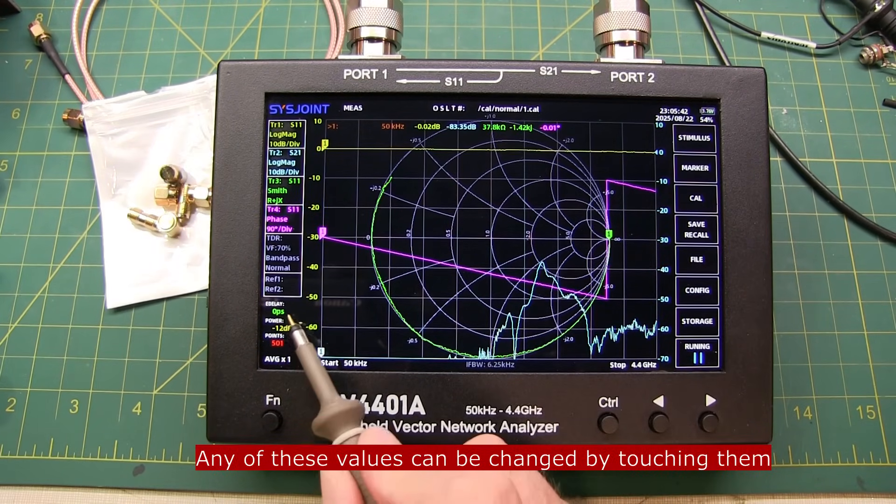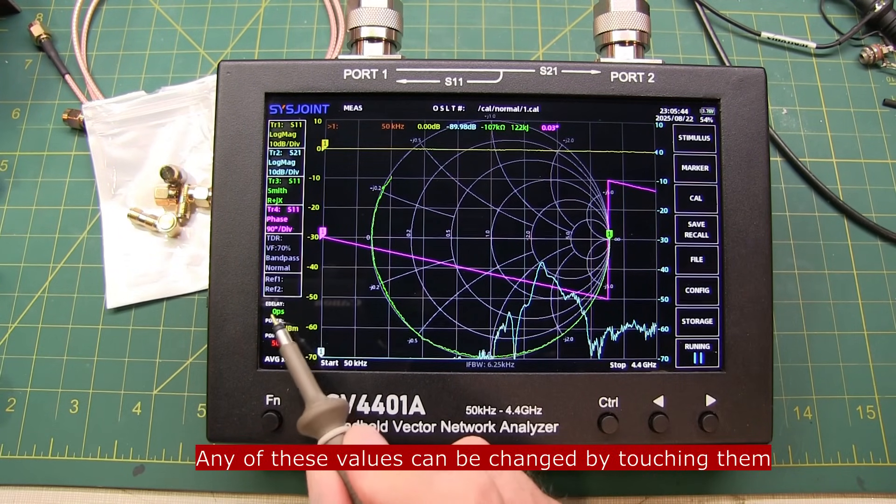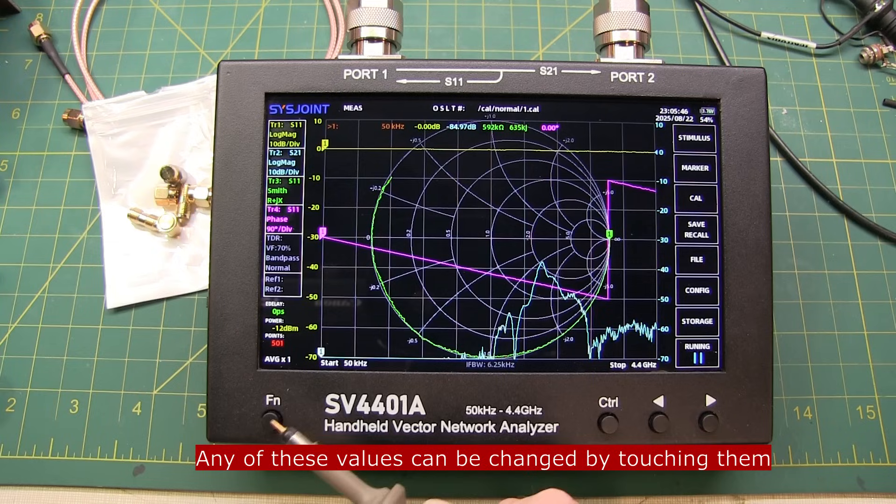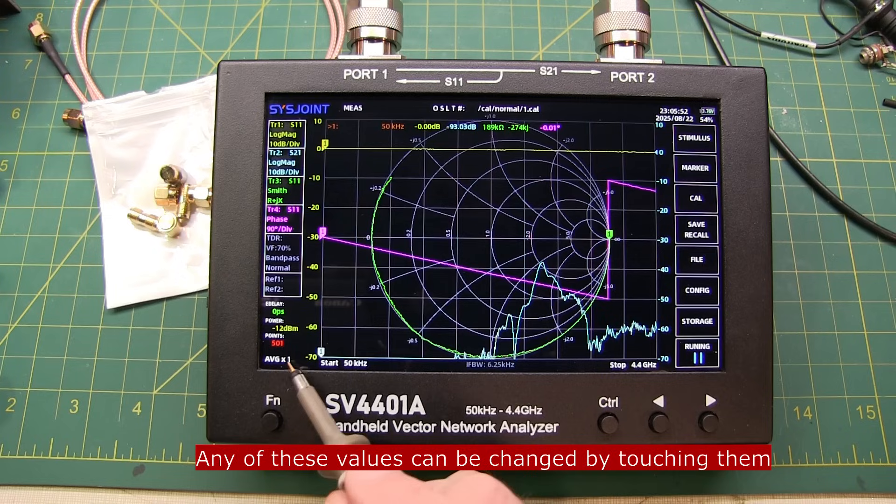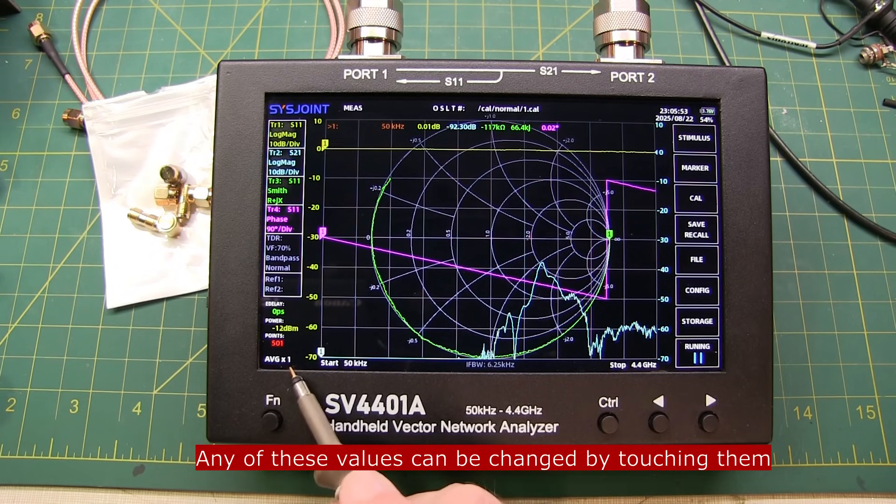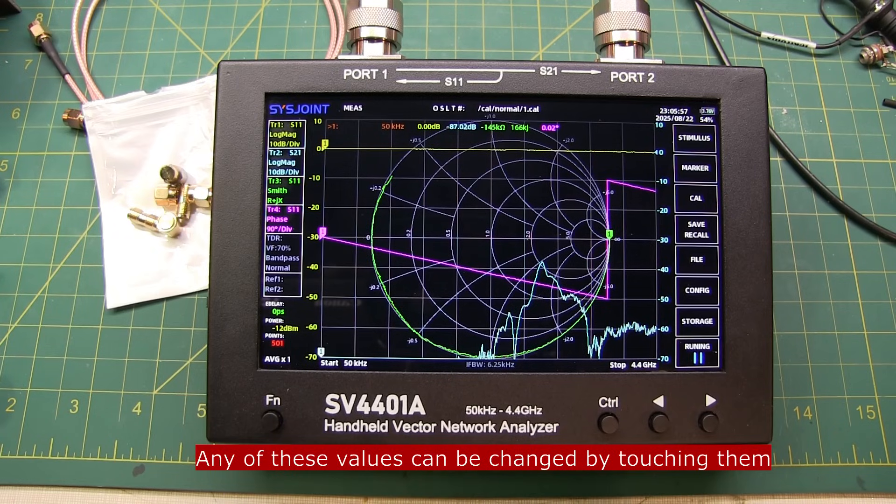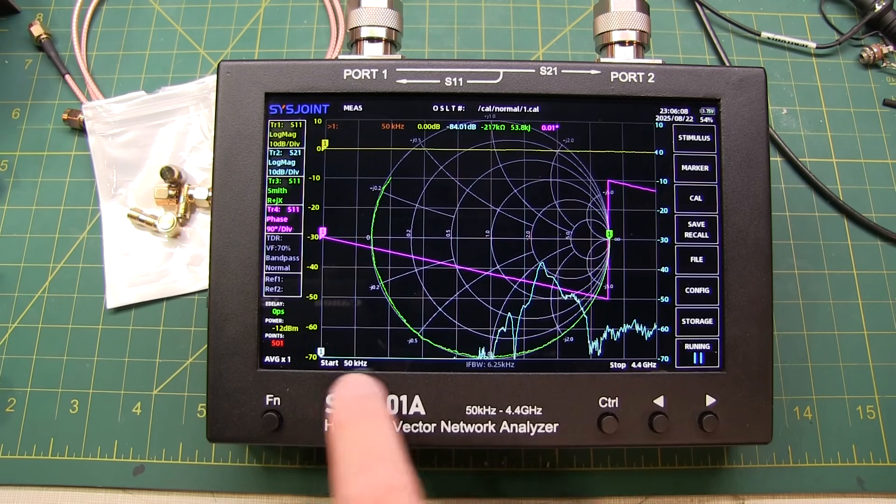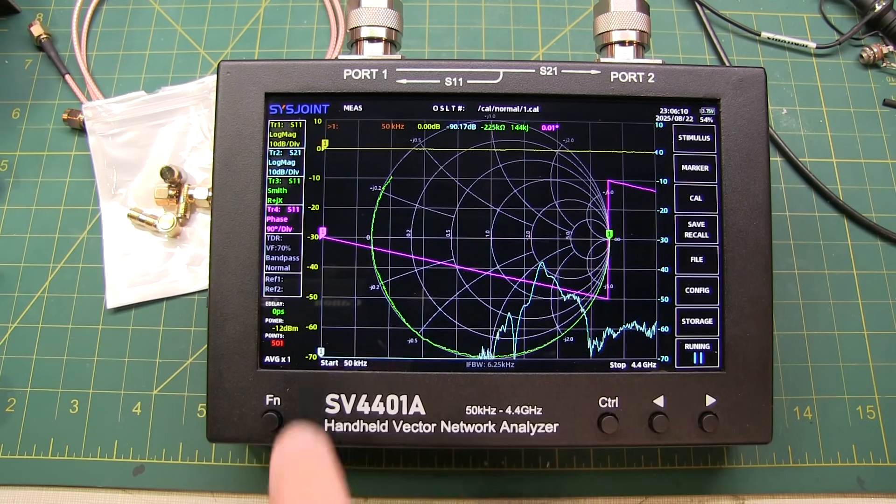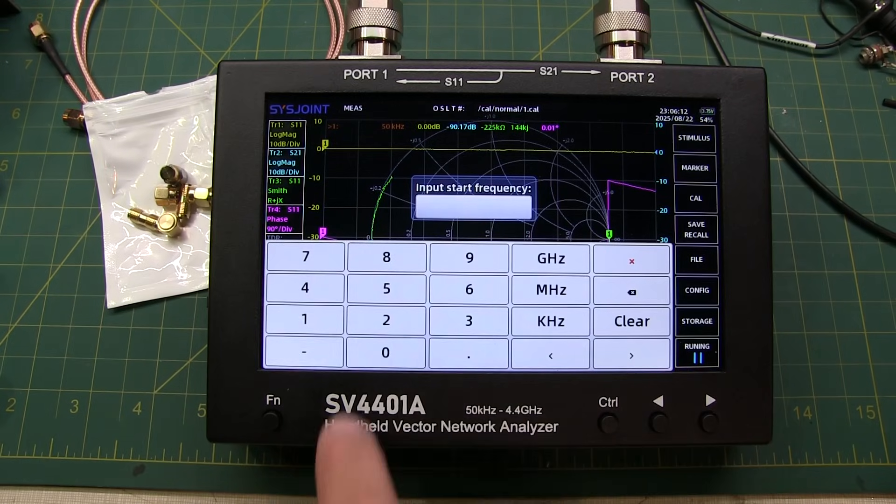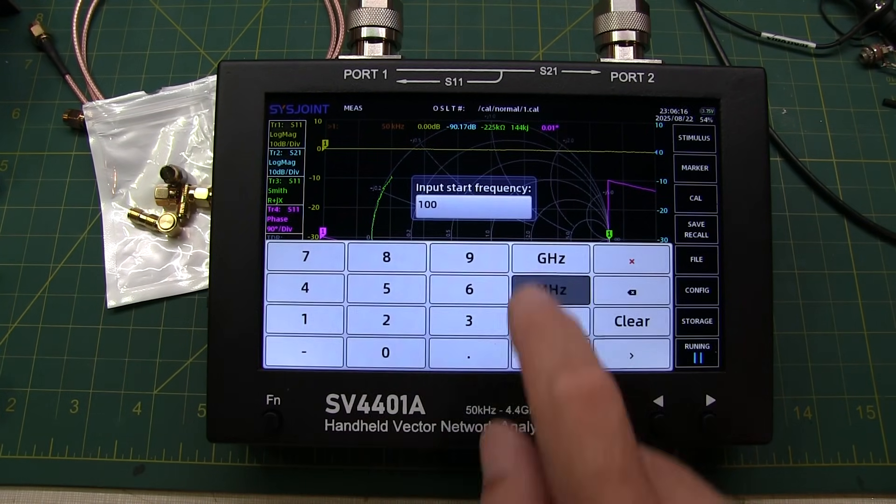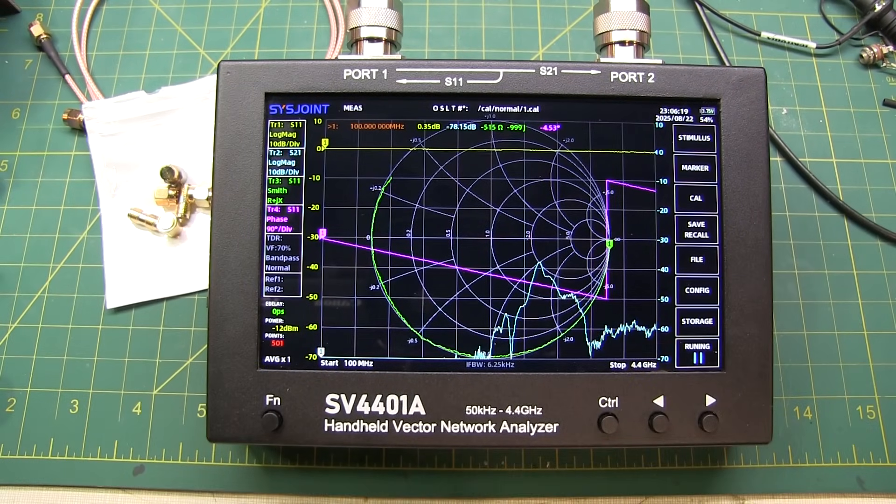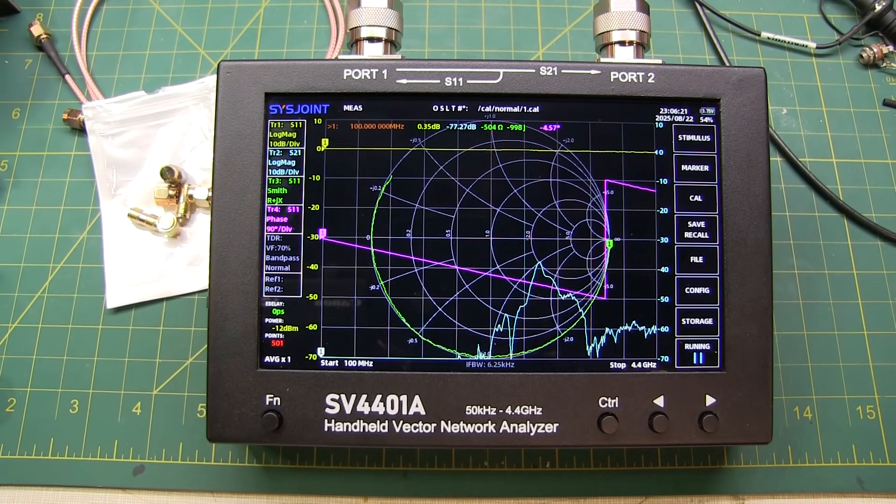The screen area also will show you the electrical delay for port extension applications. It will show you the output power and the number of points right on the screen. It will show you if you're doing any averaging. And then the frequency, the start and stop frequency shown here. You can shortcut going in and changing these parameters by simply touching on them. And now I can actually put in a new start frequency if I want to. So I'll put in say 100 megahertz. I can dial that in. And now I'm starting at 100 meg. I didn't have to bring up a menu to go do that.